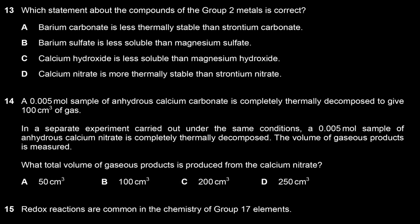Which statement about the compounds of group 2 metals is correct? The answer is B — barium sulfate is less soluble than magnesium sulfate, since sulfate solubility decreases down the group. Barium carbonate being less thermally stable than strontium carbonate is incorrect; hydroxide solubility increases down the group so calcium hydroxide being more soluble is actually correct, but calcium nitrate being less thermally stable than strontium nitrate is also correct since strontium is lower down the group.